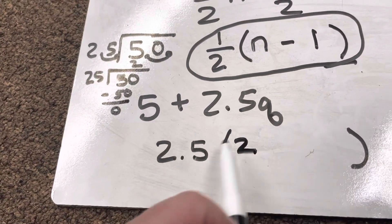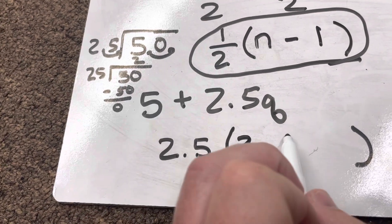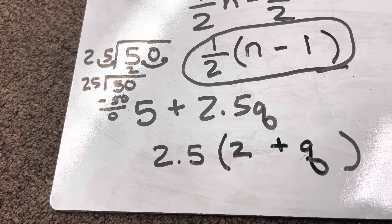2.5Q divided by 2.5, it just eliminates those, and we end up with plus Q.